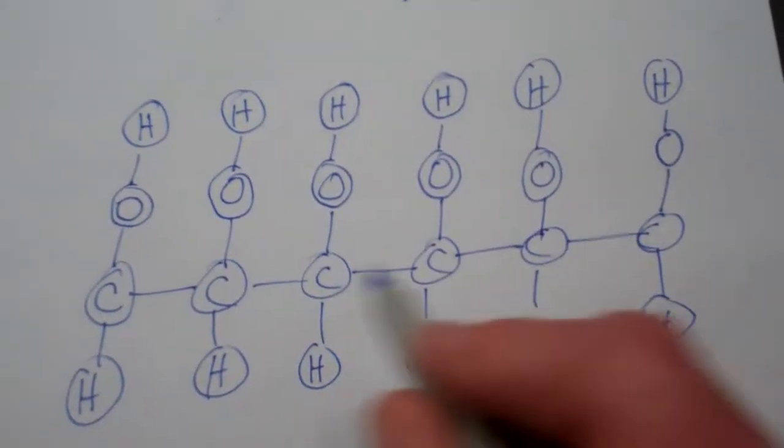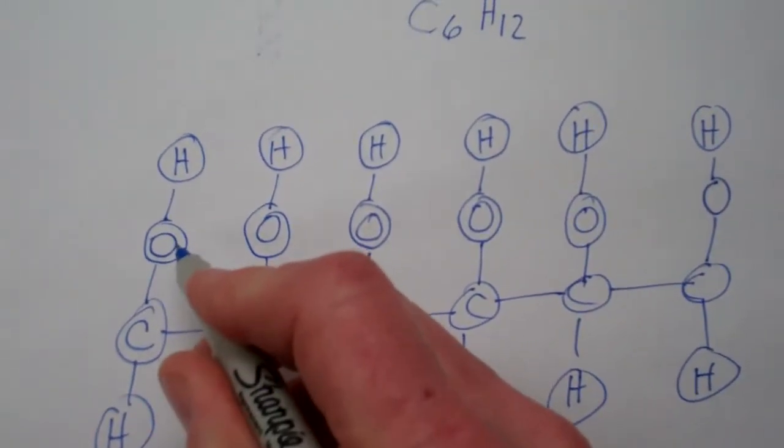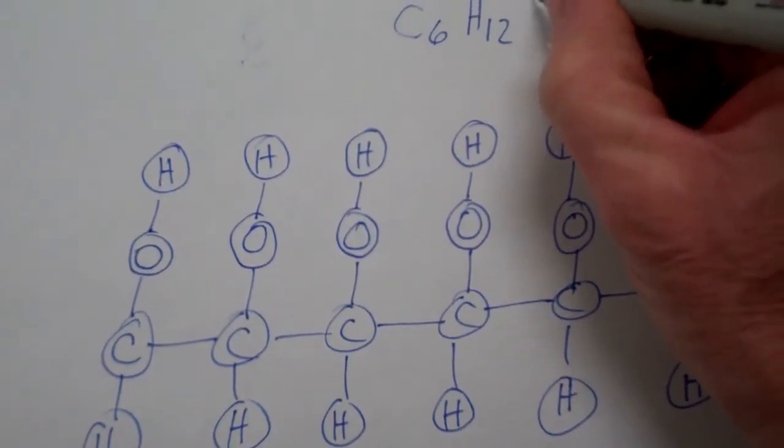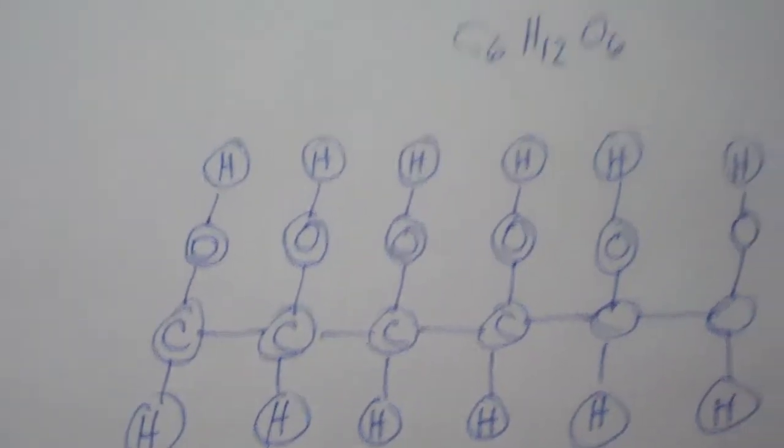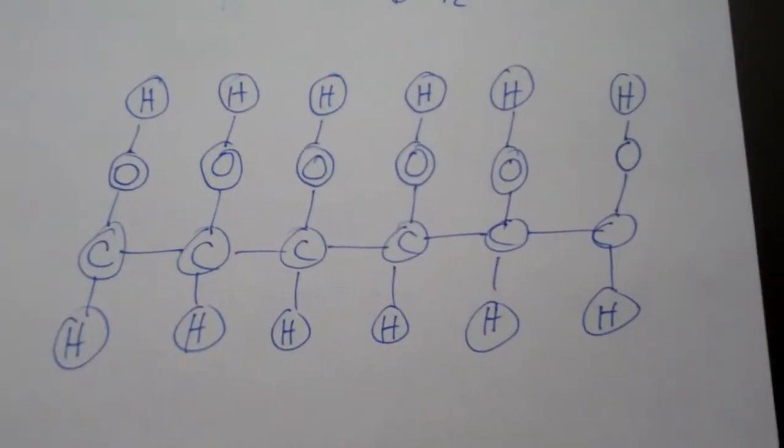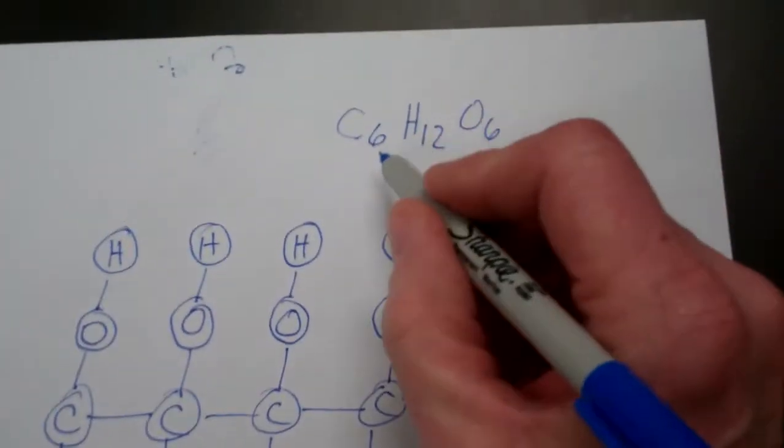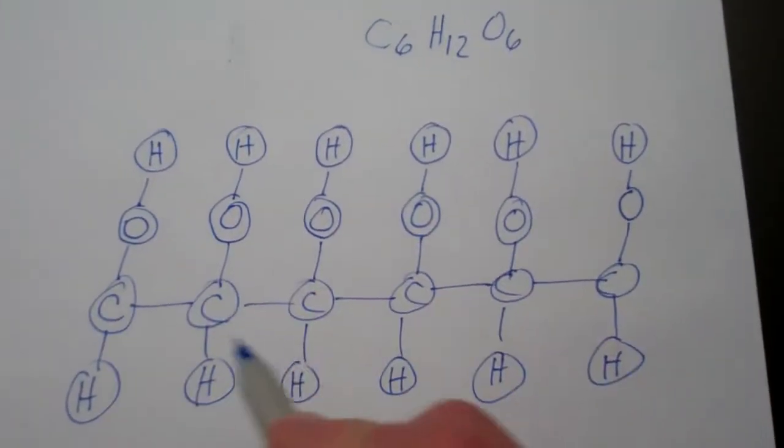And then we have six oxygens that are attached to a carbon atom, which are then attached to one of the hydrogen atoms. So C6, H12, O6. That's what one molecule of sugar looks like. And so we need to understand that that chemical formula represents this diagram.